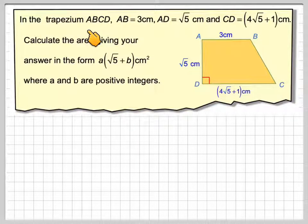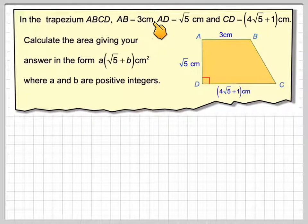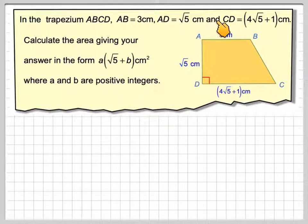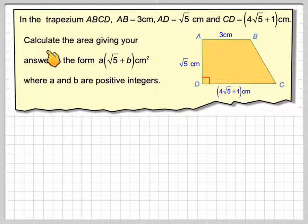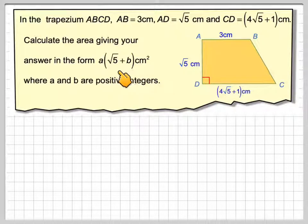In the trapezium ABCD, AB is 3 centimetres, AD is root 5 centimetres, and CD is 4 root 5 plus 1 centimetres. Calculate the area, giving your answer in the form A brackets root 5 plus B centimetres squared, where A and B are positive integers.